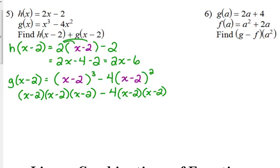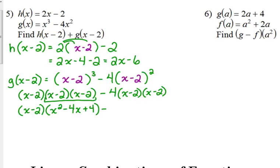We did this a little while ago earlier in the semester. When we have three binomials, we want to pair them together, FOIL that pair out, and then we'll worry about multiplying it by the x minus 2 after that. So x minus 2 times x minus 2 — I'm going to take a little shortcut. The outside is negative 2x, the inside is negative 2x, so put those together for negative 4x. That gives us x squared minus 4x plus 4.